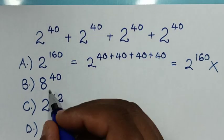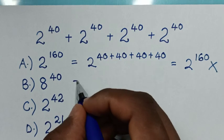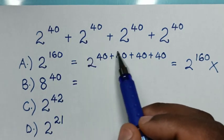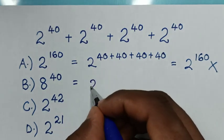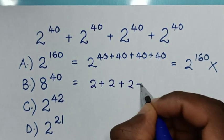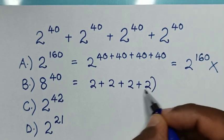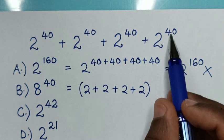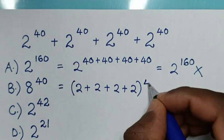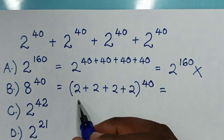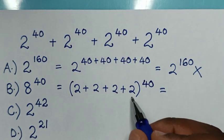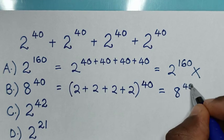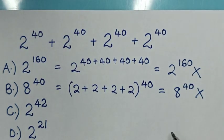Now let's check for the answer in B, 8 power of 40. This is equal to the sum of these bases: 2 plus 2 plus 2 plus 2, then bracket, and in here we have a common power of 40. So it becomes 2 plus 2 plus 2 plus 2, which is 8, then power of 40. Also this is the wrong solution.